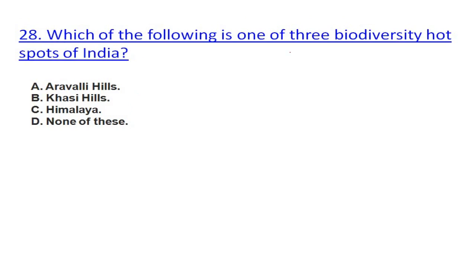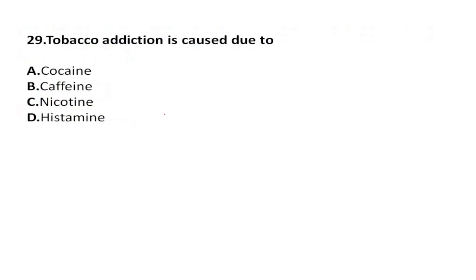Which of the following is one of the three biodiversity hotspots of India? It is actually the Western Himalayas. The Western Ghats is also a biodiversity hotspot of India — please remember. Tobacco addiction is caused due to nicotine.